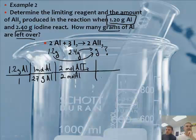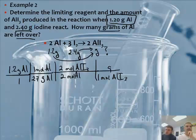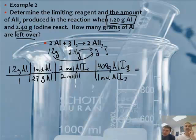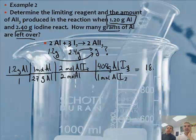Then go from moles of AlI₃ — that's a 1 — to grams of AlI₃. The molar mass of AlI₃ is 408 g/mol. So doing the math: 1.2 divided by 27, times 2 divided by 2, times 408 equals 18.1 grams of AlI₃.